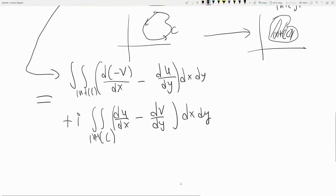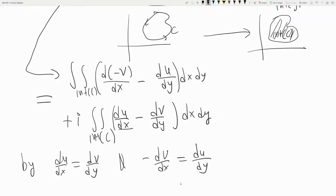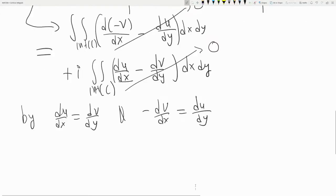So now let's use Cauchy-Riemann. So by CR, what do we have? We have du/dx is equal to dv/dy, and minus dv/dx is equal to du/dy. So this guy is 0 and this guy is 0, and we get 0. So we show that the contour of F is 0.